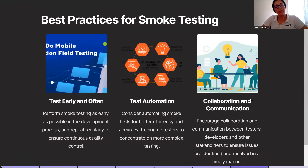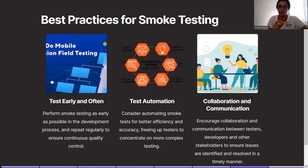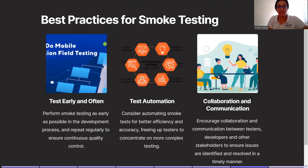Now, best practices for smoke testing. One is test early and often. Perform smoke testing as early as possible in the development phase and repeat regularly to ensure continuous quality control. As soon as you receive a build, perform smoke testing to ensure it is stable and there are no major defects. Second, test automation. Consider automating smoke tests for better efficiency and accuracy, freeing up testers to concentrate on more complex testing areas. Third, collaboration and communication. Encourage collaboration between testers, developers, and other stakeholders to ensure issues are identified and resolved in a timely manner.